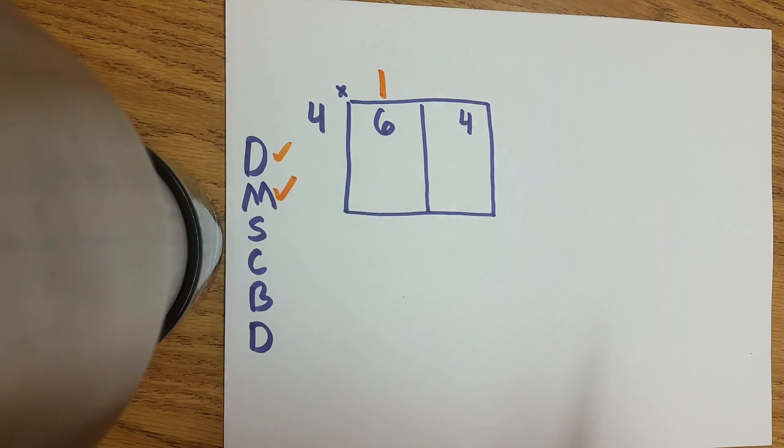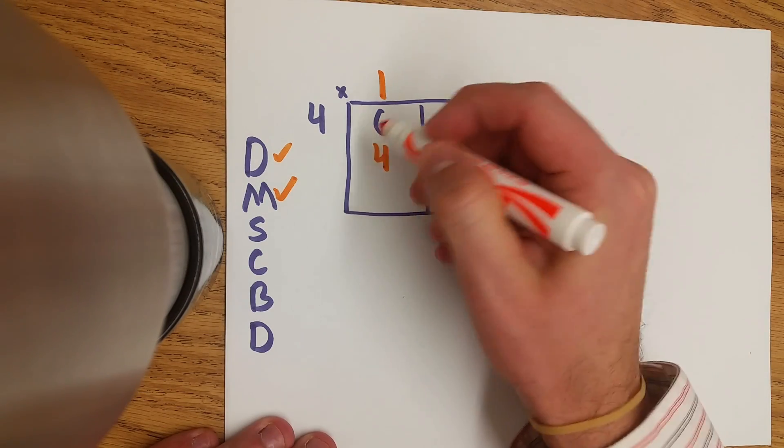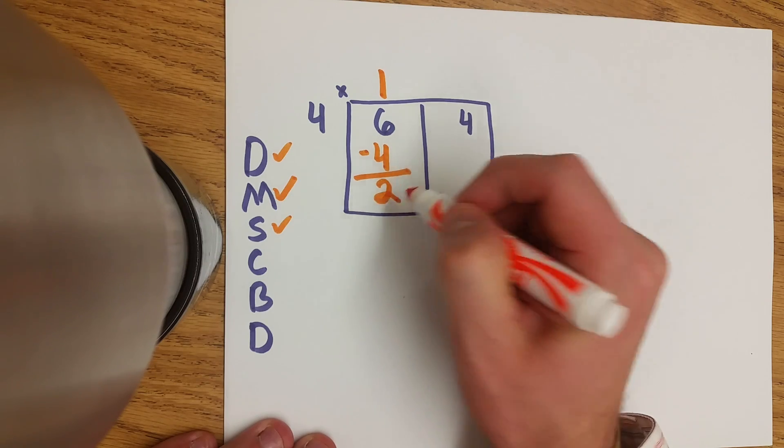So we put our 1 on top and then we multiply that 1. 1 times 4 equals 4. Now we subtract that 4. 6 minus 4 is 2.